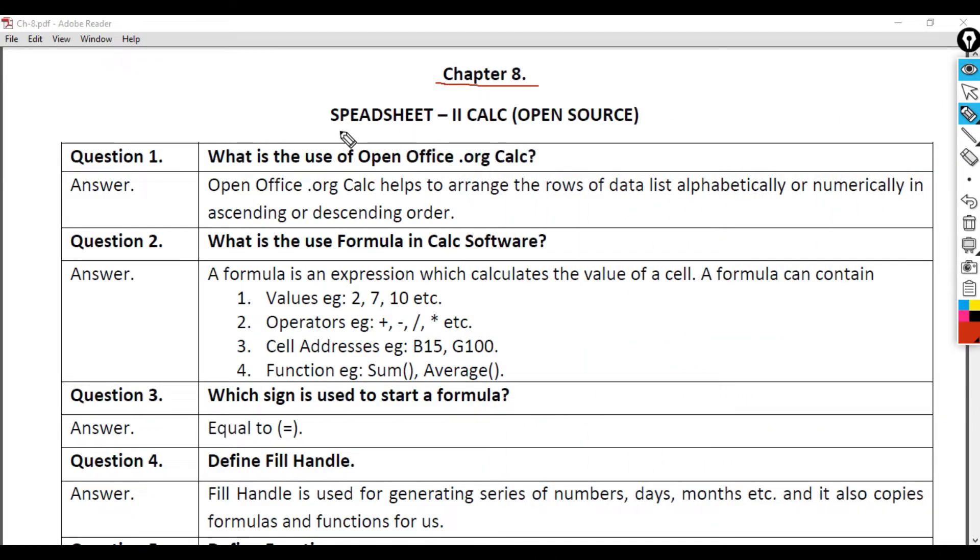Chapter 8: Spreadsheet - Calc (Open Source). Question 1: What is the use of OpenOffice.org Calc? Answer: OpenOffice.org Calc helps to arrange the rows of data list alphabetically or numerically in ascending or descending order.